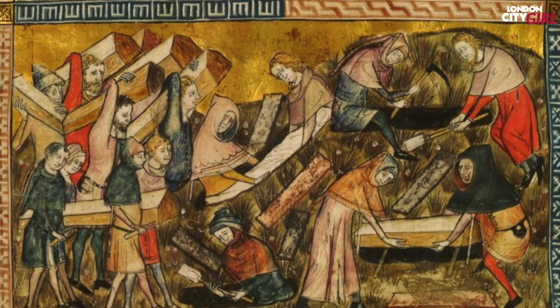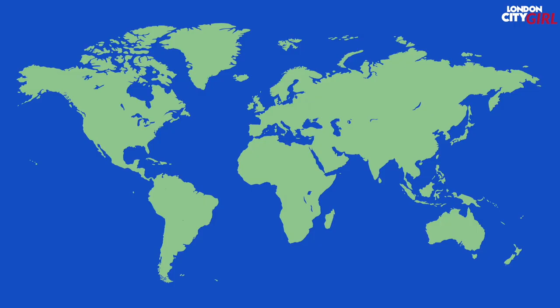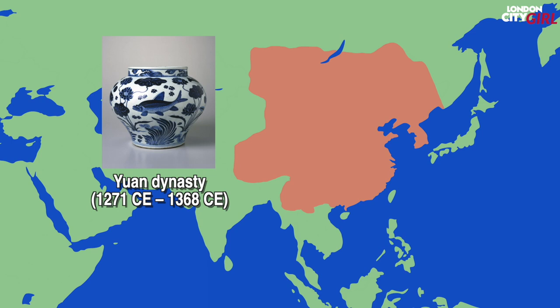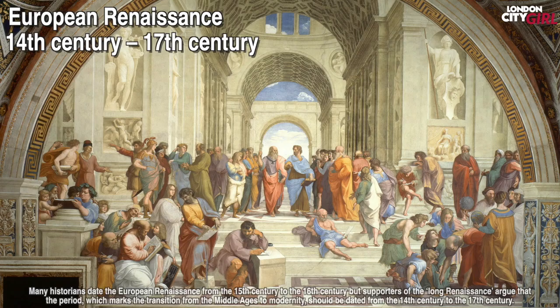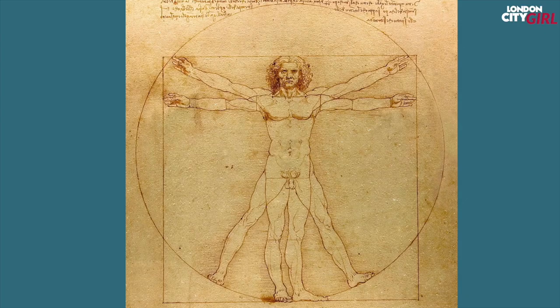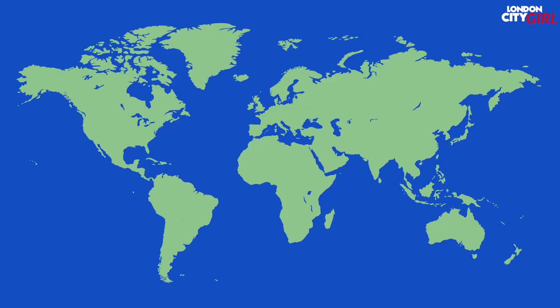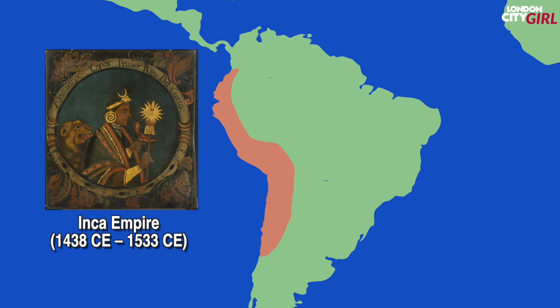30 to 60 percent of the entire population of Europe was wiped out and population growth did not resume until a full century later. In 1368 CE after about a century of Mongol Yuan dynasty rule, the ethnic Han Chinese reasserted control with the founding of the Ming dynasty. From the 14th century to the 17th century the European Renaissance took place. It was a movement that emphasised the value and agency of human beings individually and collectively. The Renaissance preferred logic and evidence over acceptance of dogma or superstition. Around 1438 CE the Inca Empire was flourishing in western South America.